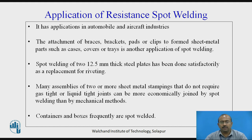Applications of resistance spot welding include automobile and aircraft industries. Attachment of braces, brackets, pads, or clips to sheet metal parts such as cases, covers, or trays is another application. Spot welding of two 12.5 mm thick steel plates has been done satisfactorily as a replacement for riveting. Many assemblies of sheet metal stampings that do not require gas-tight or liquid-tight joints can be more economically joined by spot welding than by mechanical methods. Containers and boxes are also frequently spot welded.